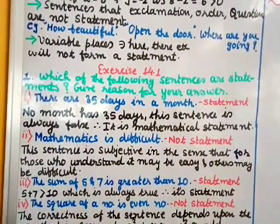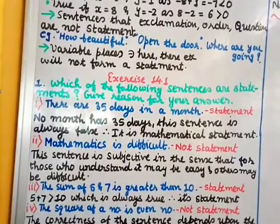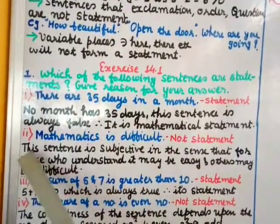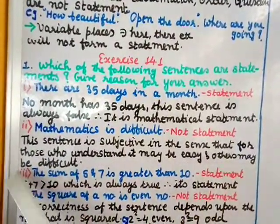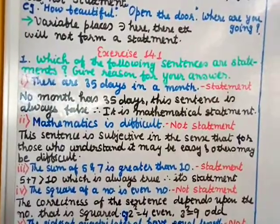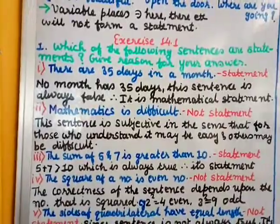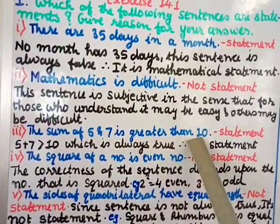Roman numeral two: 'Mathematics is difficult' — this is not a statement. It depends on each person. For some people it may be easy, for some it may be difficult, so it has no fixed answer. This sentence is subjective — for those who understand it may be easy, others may find it difficult. By the definition of statement, it should be either true or false, not both. This sentence can be true for some people and false for others, so it is not a statement in mathematics.